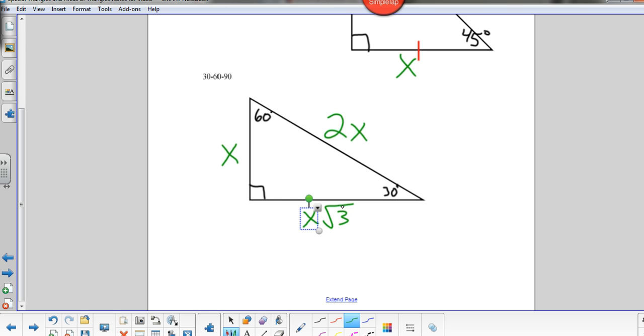And the long leg is going to be whatever the short leg is times the square root of 3. And that relationship holds true in any 30-60-90 triangle. So the short leg is x, the hypotenuse is double that, twice as long, and the long leg is going to be whatever the short leg is, x times the square root of 3. That will always be the case for 30-60-90.